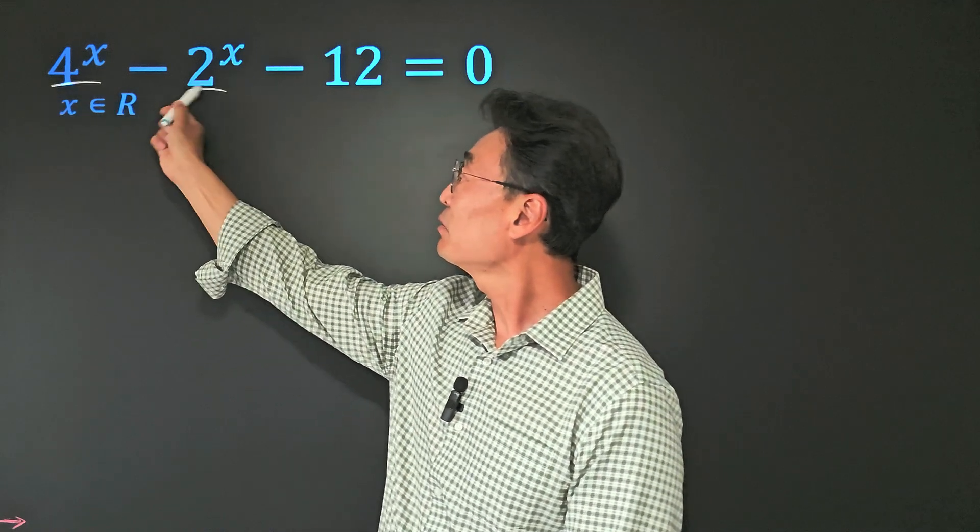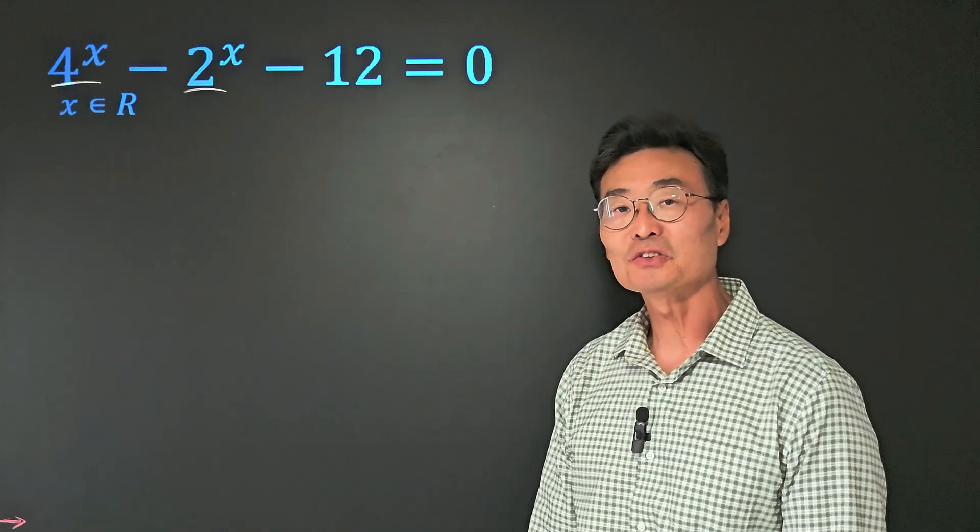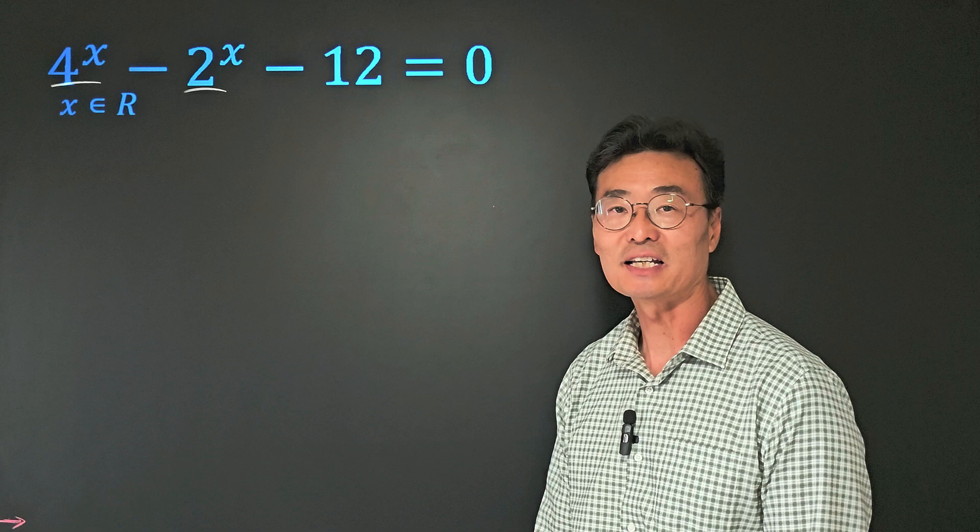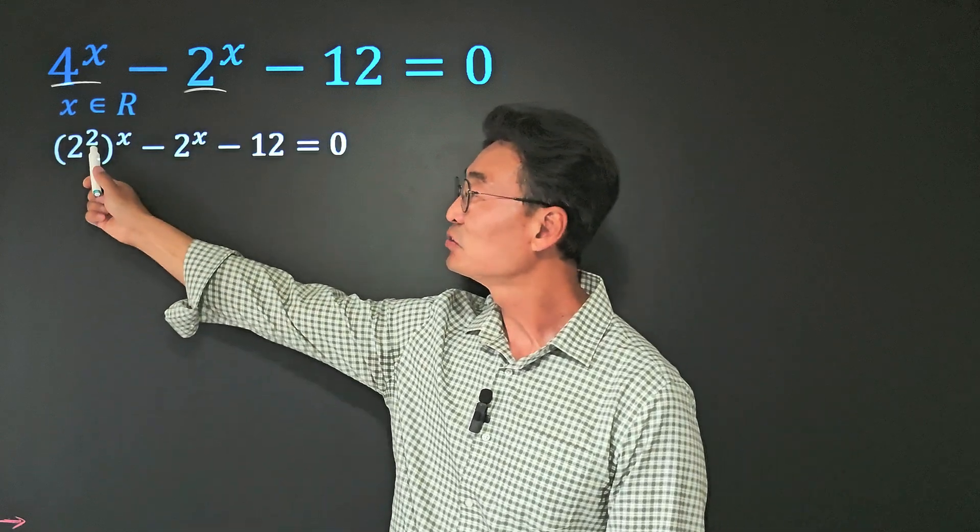First, notice that we have a base of 4 here while we have a base of 2, so we need to change it so that they have the same basis. We'll change that 4 into 2 squared.